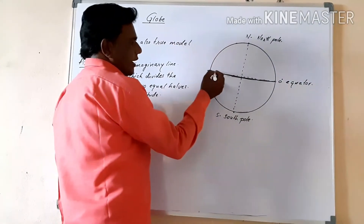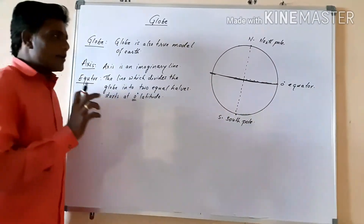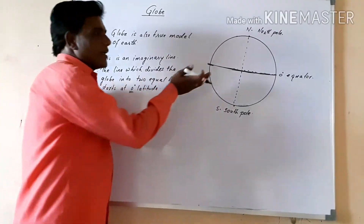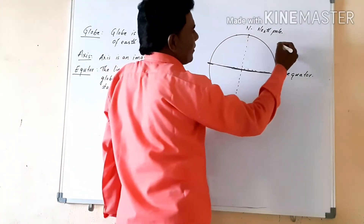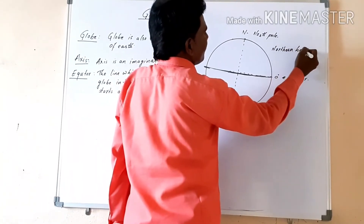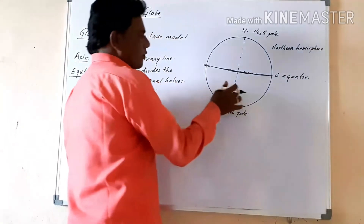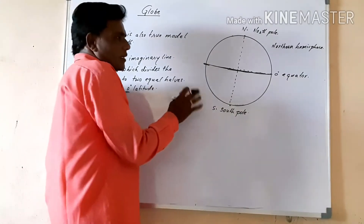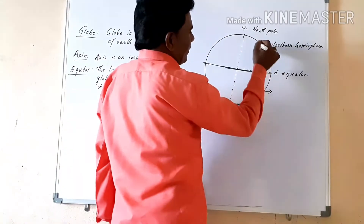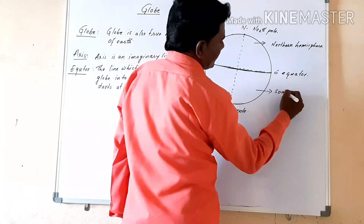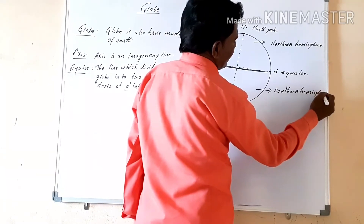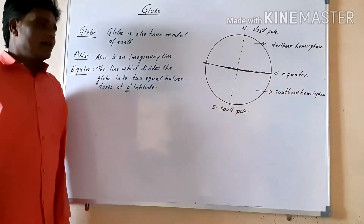Whenever we divide the globe into two halves — this half and this half — the upper portion from the equator line is called the Northern Hemisphere, and the lower portion, which starts from the equator to the South Pole, is called the Southern Hemisphere.